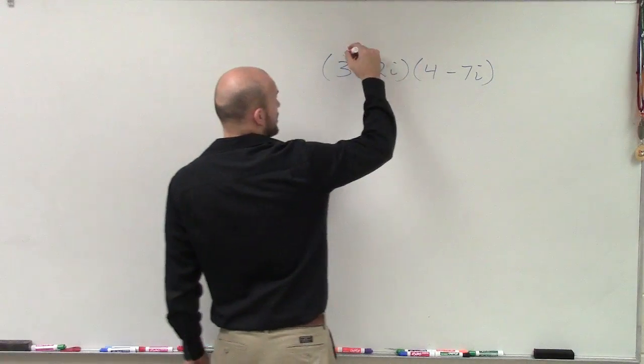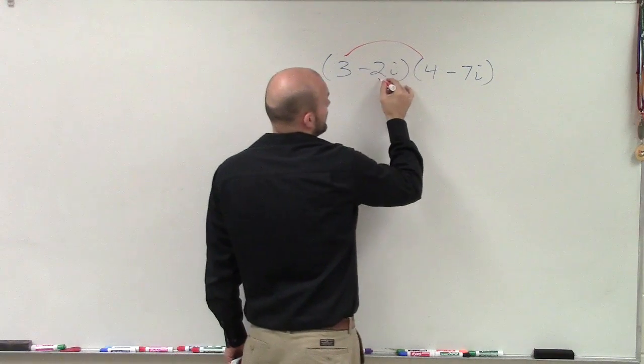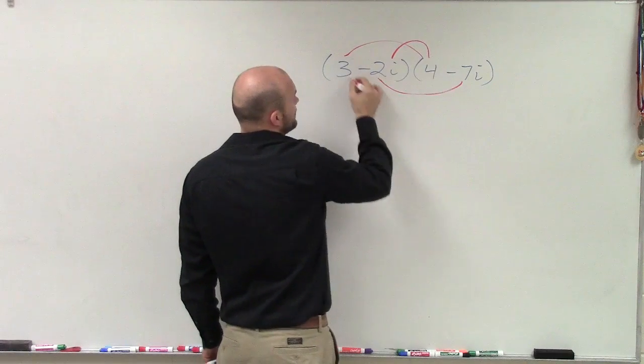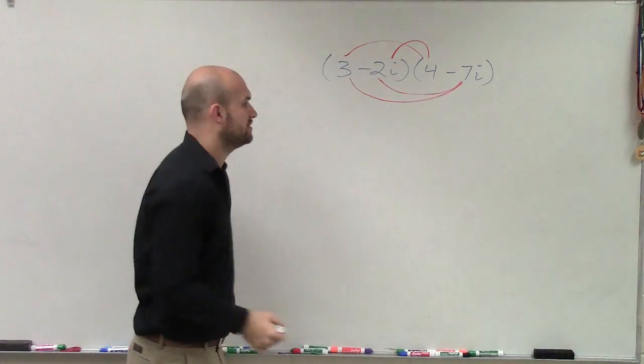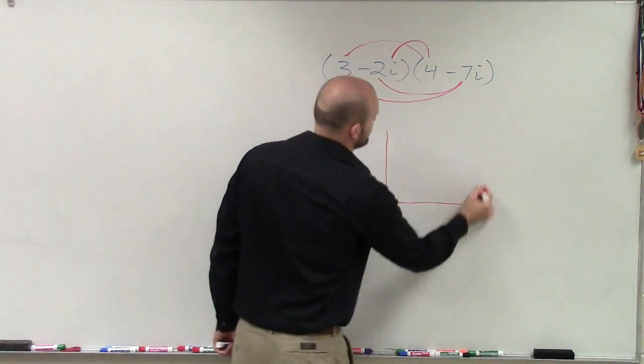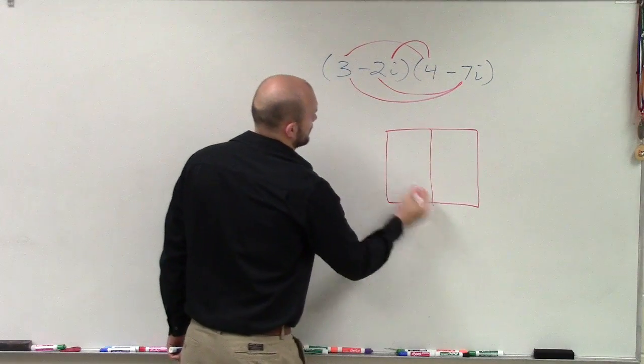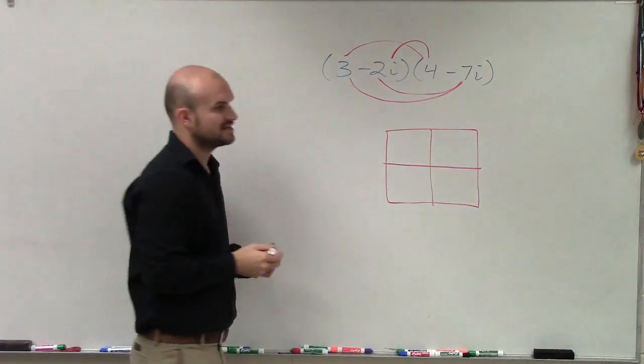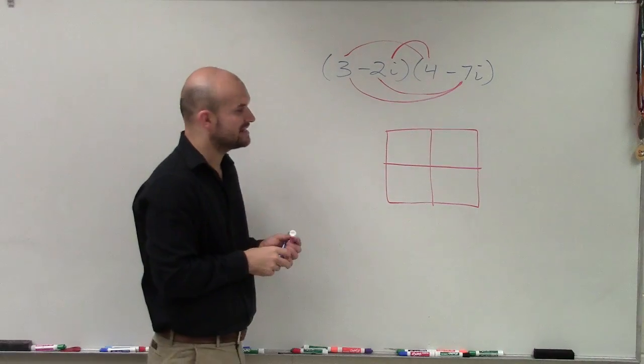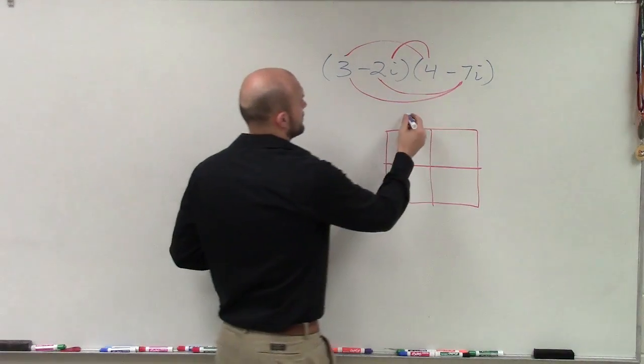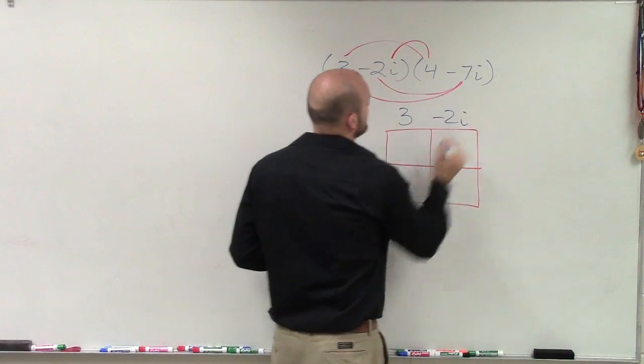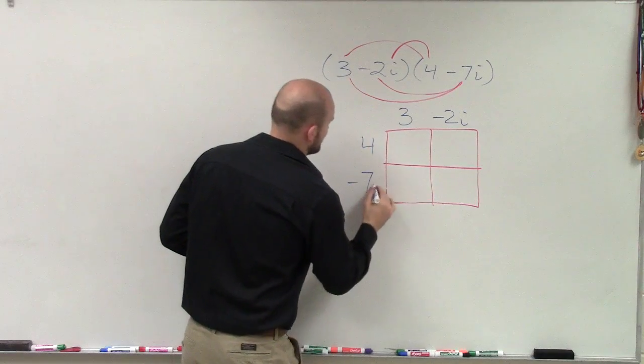On the box method, all I'm simply doing is I'm doing FOIL - I'm doing the first, the outer, the inner, and the last. But with the box method, all I simply do is I just write one binomial on top and one binomial on the side: 3 minus 2i, 4 minus 7i.